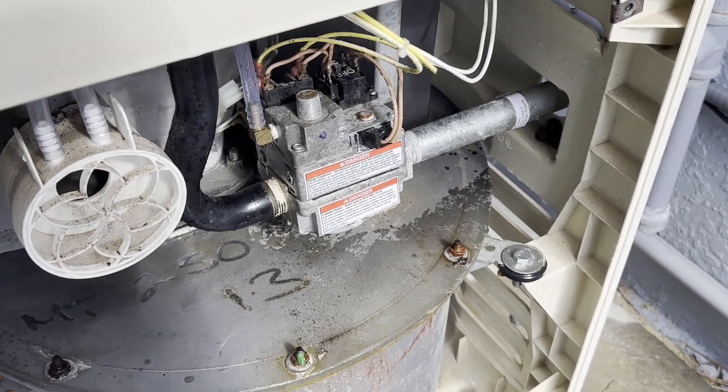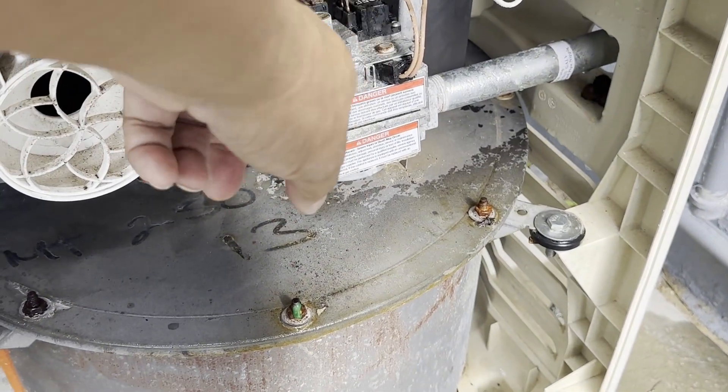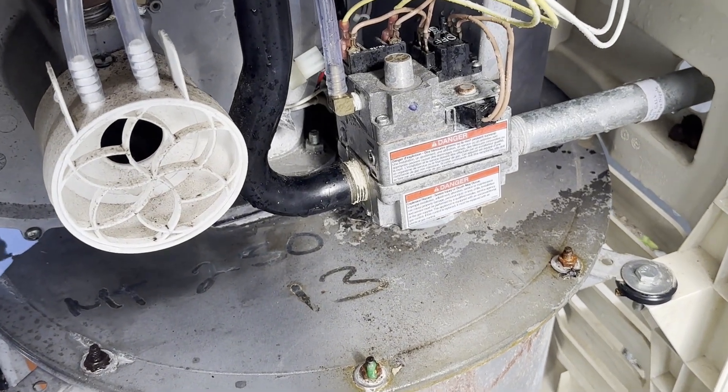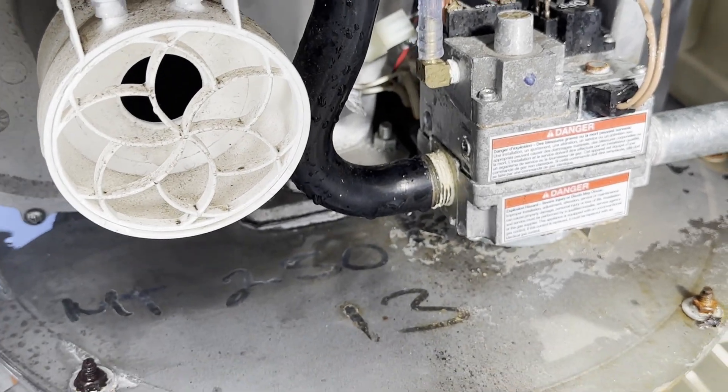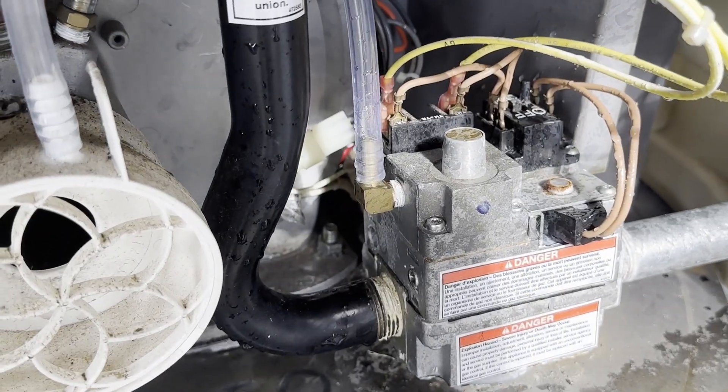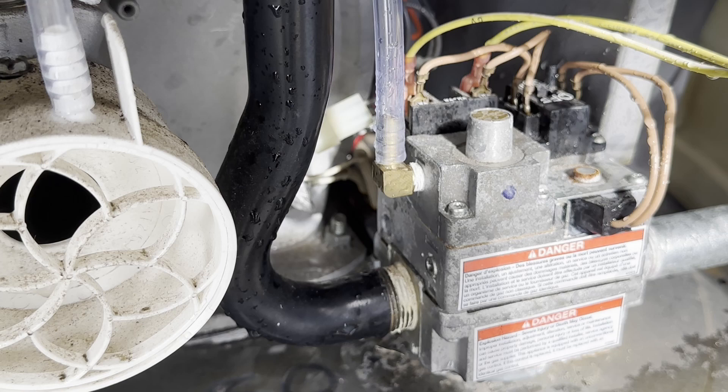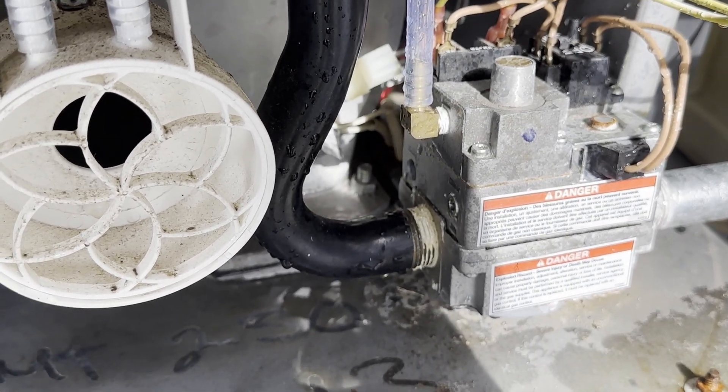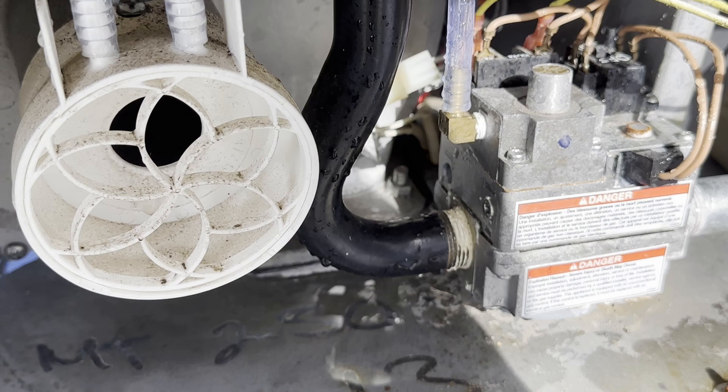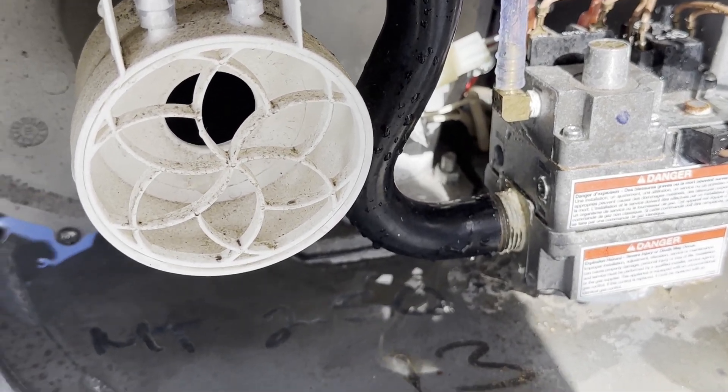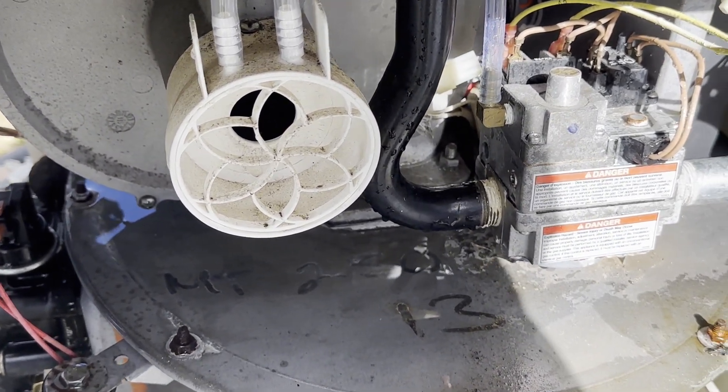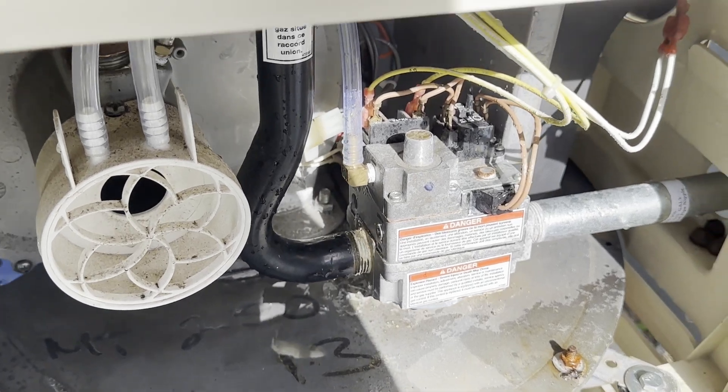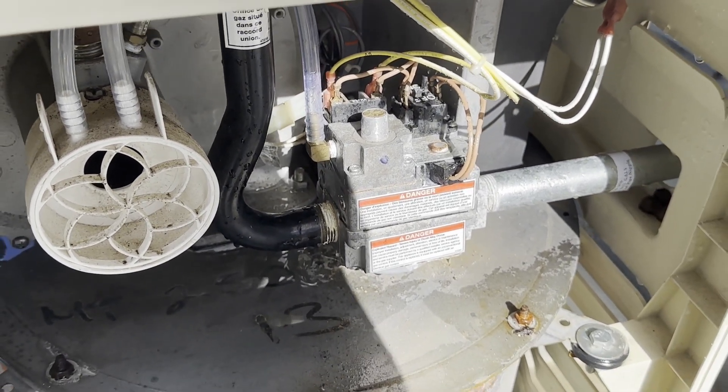So before we started all this, we checked to make sure that we had power going to the valve. So before we checked the AGS sensor, we checked that the valve was in the on position and that there was initial power coming to the valve so that when it received the signal from the igniter to turn on, it would kick on. So we had low-voltage 24 volts coming from it. So now, we just need to check the AGS sensor and we're good to go.